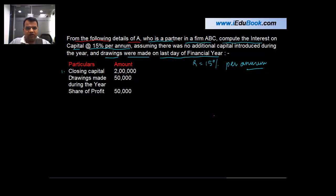So the particulars given are: closing capital of 2 lakh, drawings made during the year 50,000, and share of profit 50,000.